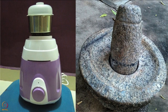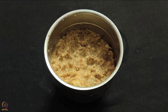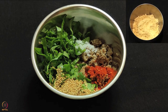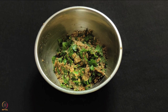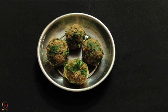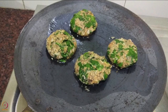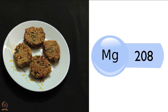You can use a mixer or a stone grinder to make the paste. Heat a pan and roast the sesame seeds till they turn light golden; let them cool. To make the cutlets, take the sprouts paste in a bowl and add roasted sesame seeds, spinach, gram flour, spices, salt, and lemon juice. Mix well. If the paste is dry, add 1 tablespoon water. Divide into four portions and shape into cutlets. Shallow fry on medium heat till both sides turn golden brown. Moth beans spinach cutlets are ready — 4 cutlets contain around 208 milligrams of magnesium.